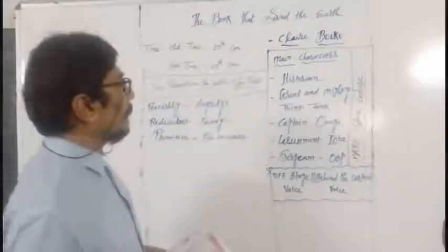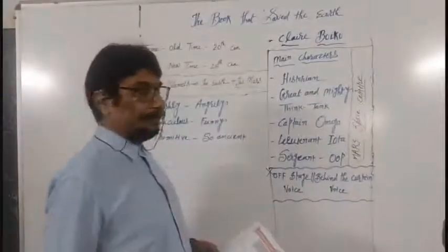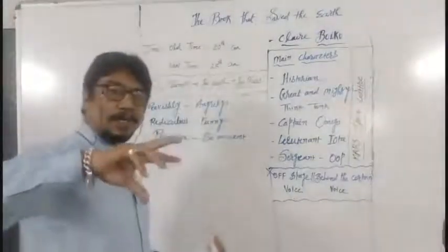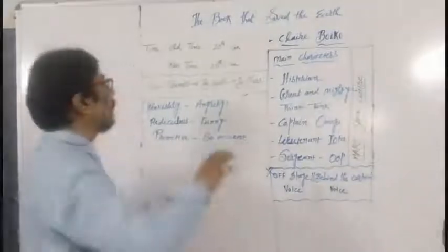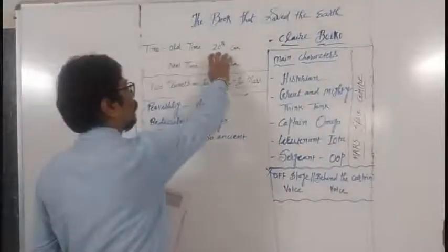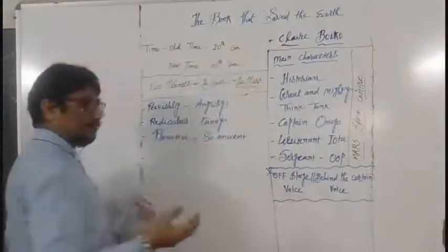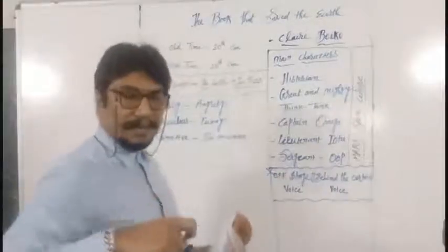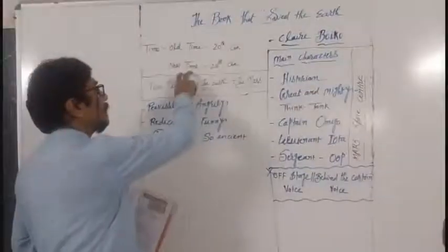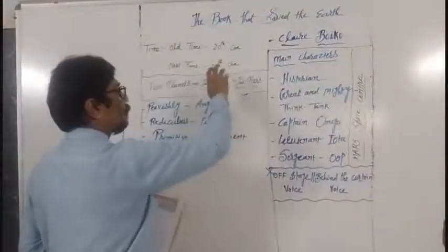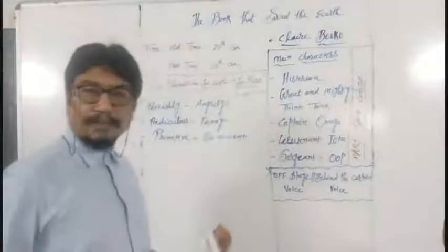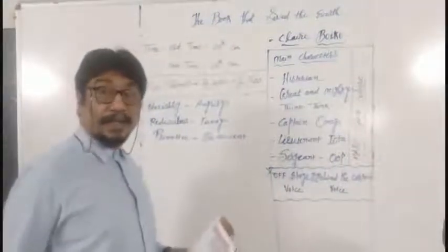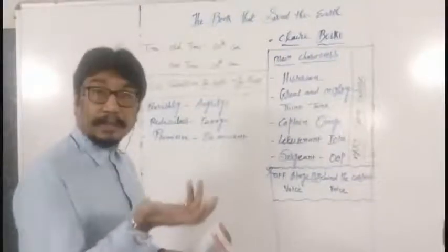The lesson is written by Claire Boiko. Here she has written directly and indirectly two different situations. One is the situation of 20th century, and we are in 21st century, very near to our time duration. And next to that, one new time she has mentioned, that is of 25th century, near about 500 years after. What will be the condition on this planet?